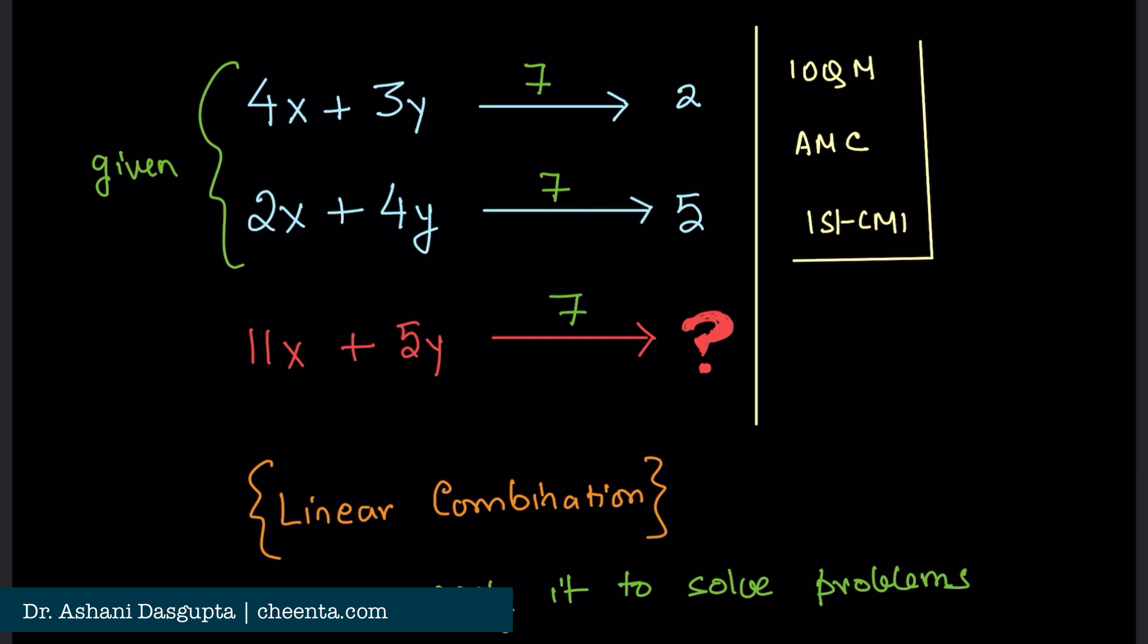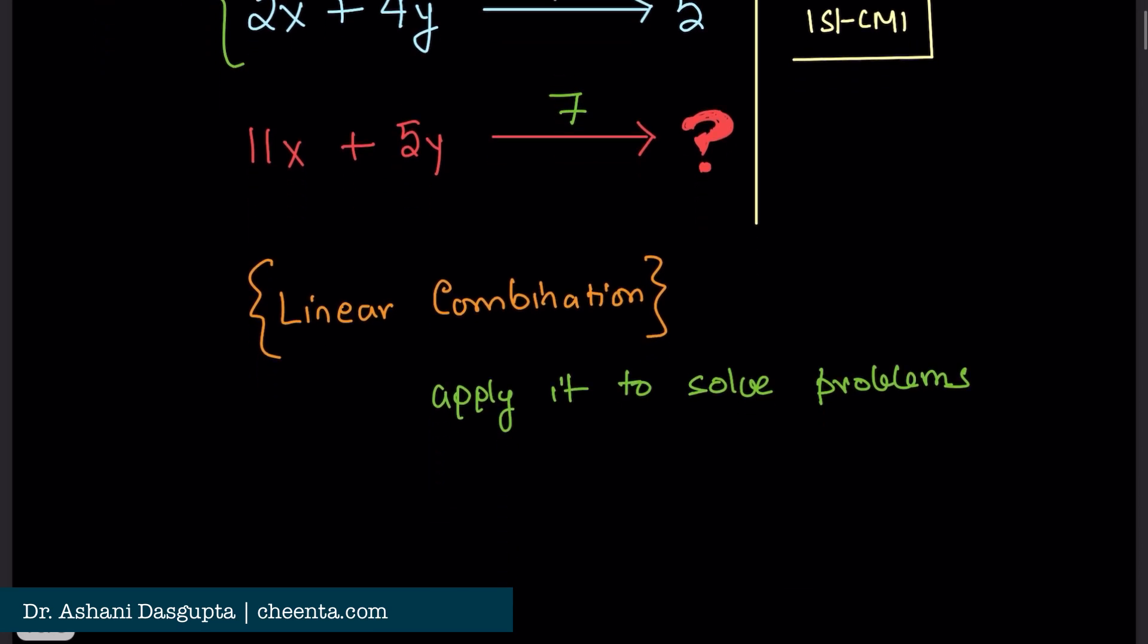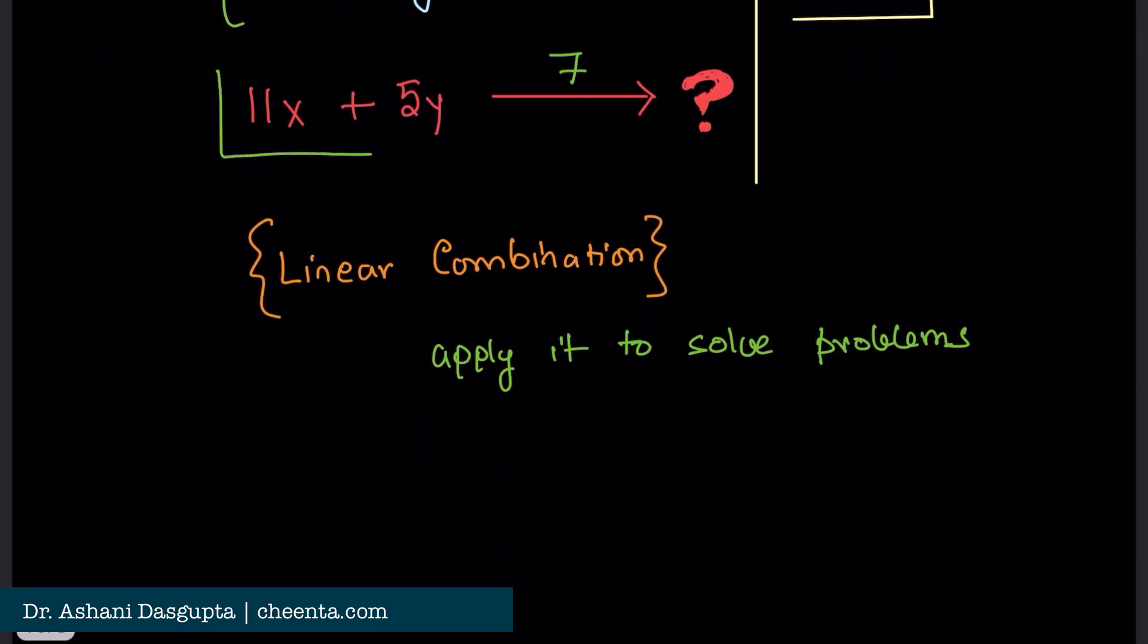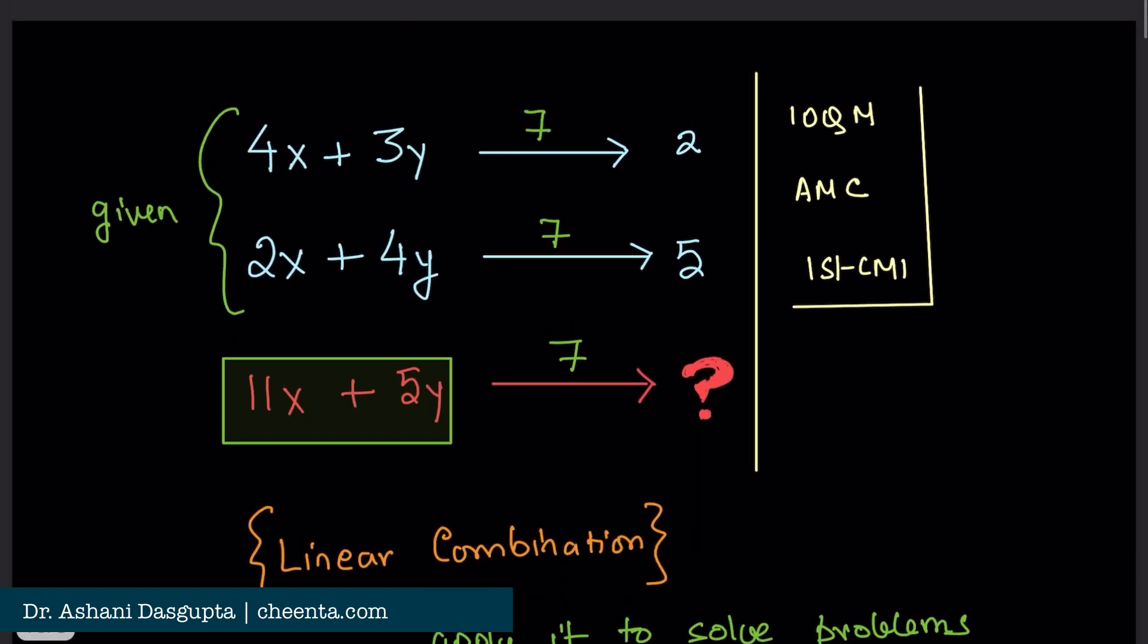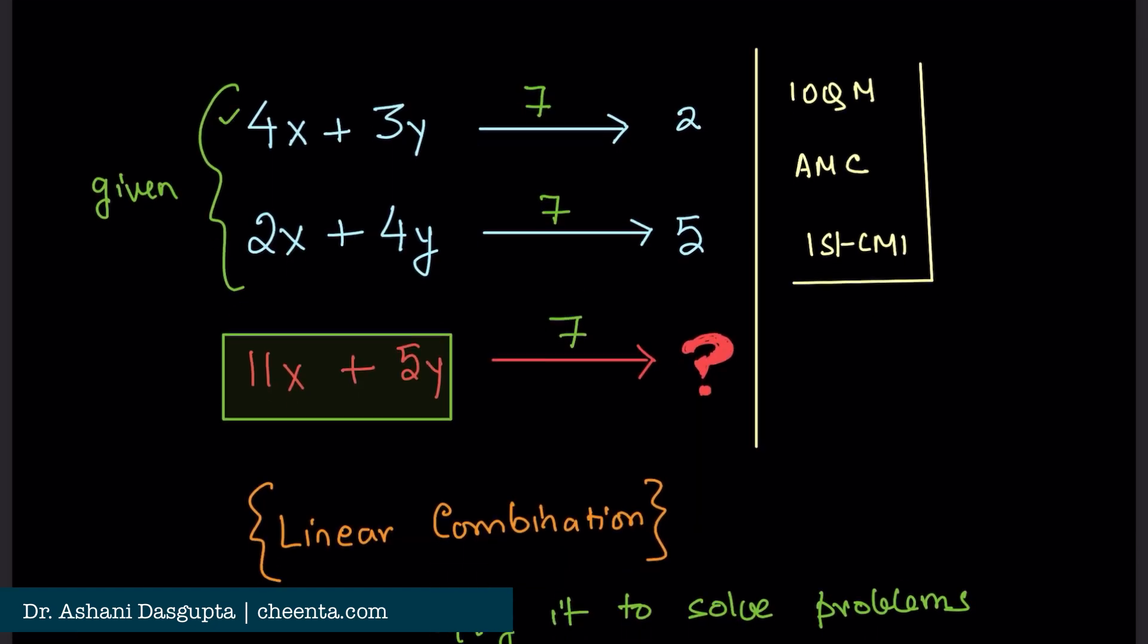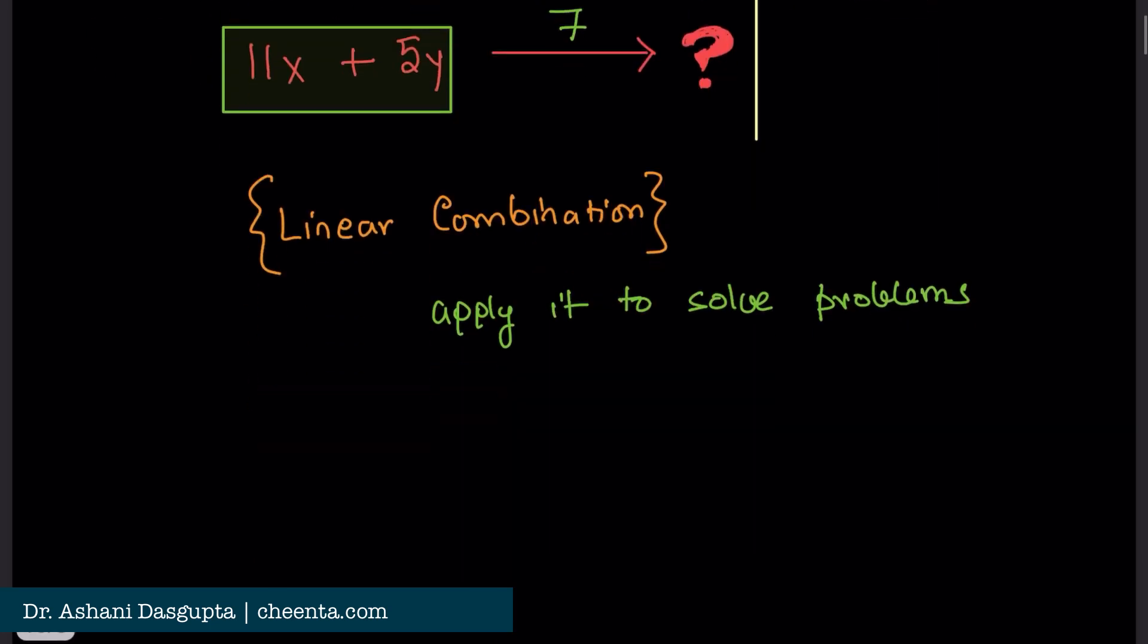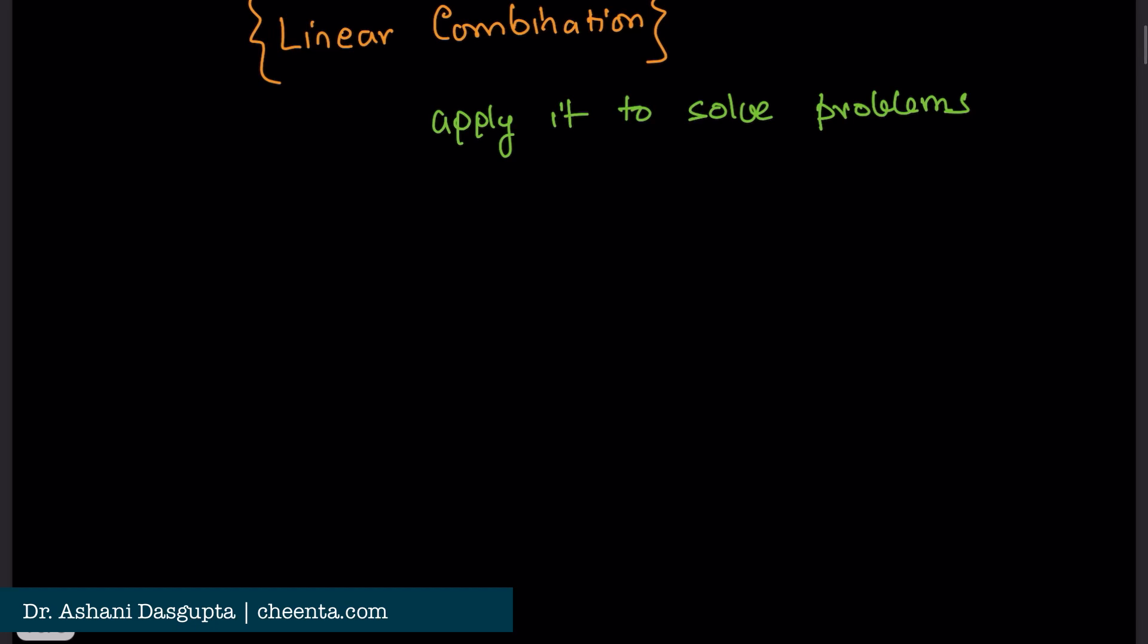What we are going to do is that we will write 11x plus 5y as a linear combination of these two things. Let me write it down. I will tell you what that means.